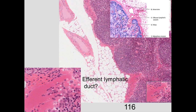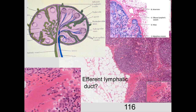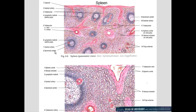Fluid comes in through the afferent lymphatics, percolates down through the sinuses, and exits through the efferent lymphatic — which has valves — through the hilus region where blood vessels also enter and exit. From there it travels on to the thoracic duct.